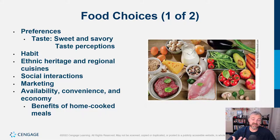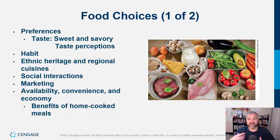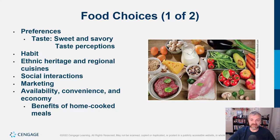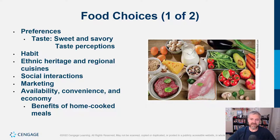Ethnic heritage and regional cuisines also influence our choices. I've taught students from all over the country and all over the world, and people eat the foods they were raised eating. That's one of the cool things about having a diverse student population — I get to learn so much about the cuisine in different parts of the world. There are a lot of similarities, but obviously every area has its own flavor. Even just in the United States, different parts of the country eat things very differently.